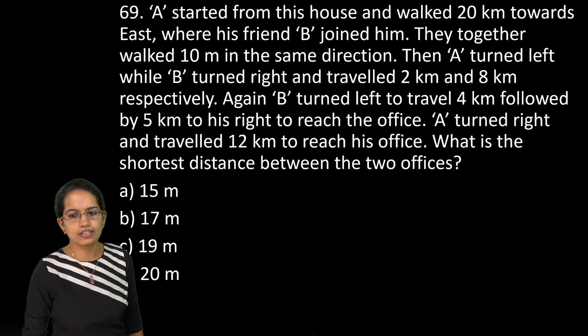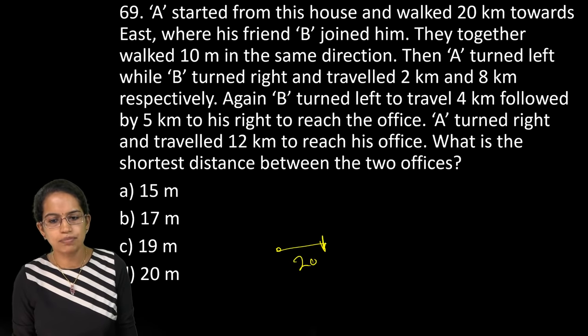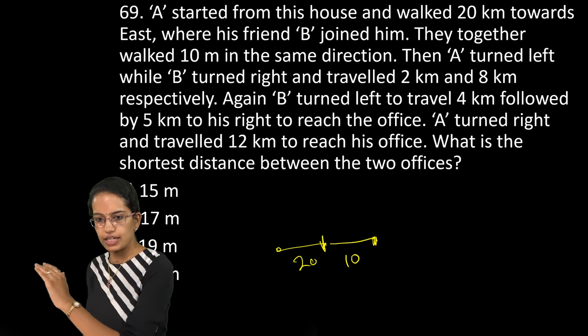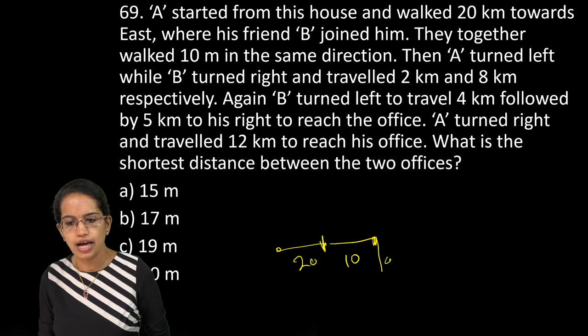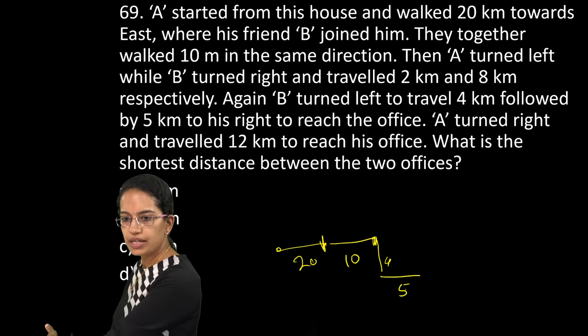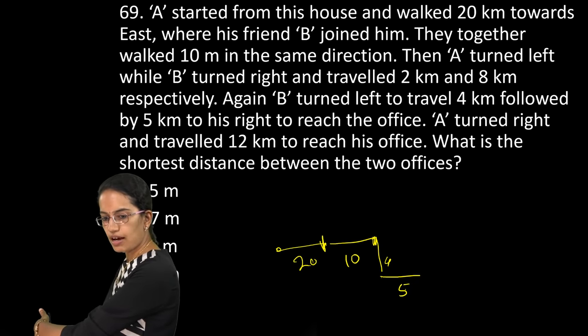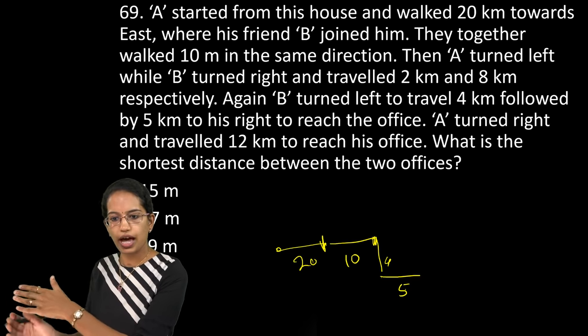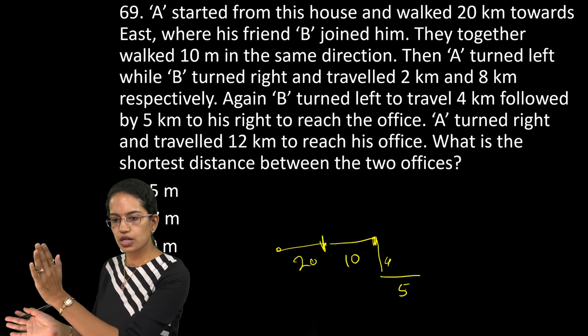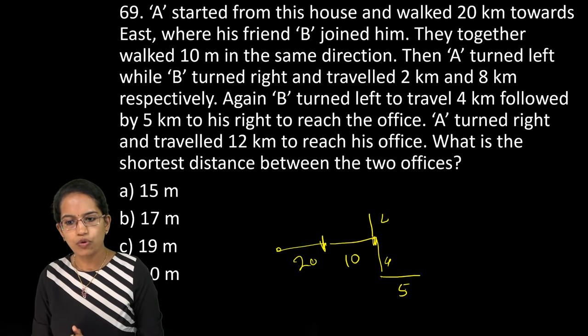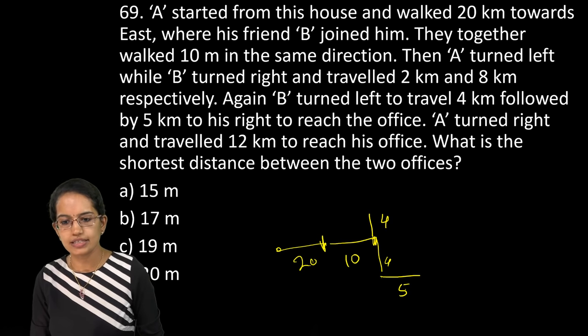Next question is, A starts from his house, walks 20. Then B joins, walks 10. Now both of the friends, A travels left while B turns right. So B would be turning right, going down. He would travel 4 and then 5. However, he would travel 4 km to the left and then he would travel to the right that is 5 km. So from this side you would have B turns to the left. So B turns to the left. So this is the left for B.